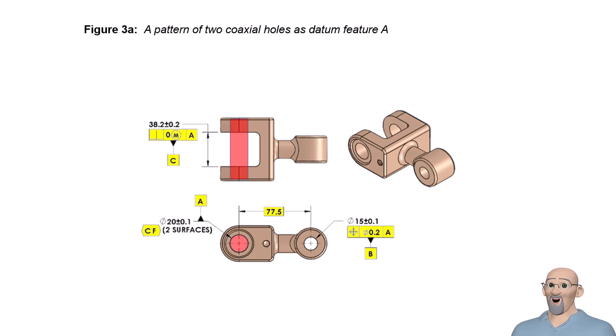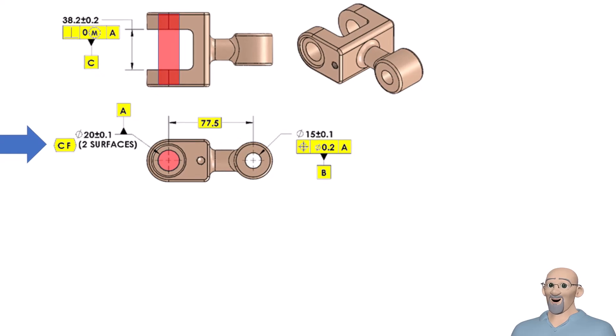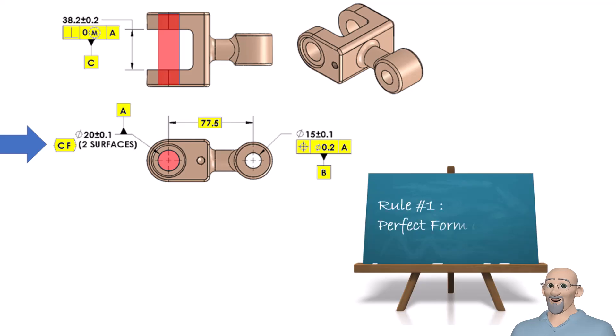Once again, we have used the continuous feature modifier. We have applied it to the size tolerance to define the pattern of two coaxial holes as a single feature. Remember rule number one says there is a perfect form boundary at the MMC limit of size. Therefore, the size tolerance controls both the form and the coaxiality of the two holes.